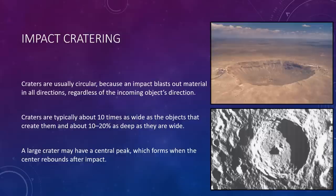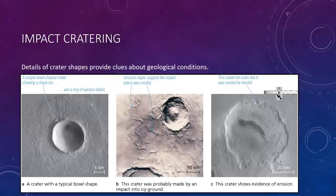Craters are usually circular because an impact blasts out material in all directions, regardless of the incoming object's direction. Laboratory experiments show that craters are typically about 10 times as wide as the objects that created them and about 10-20% as deep as they are wide. For example, an asteroid 1 kilometer in diameter will blast out a crater about 10 kilometers wide and 1-2 kilometers deep. A large crater may have a central peak which forms when the center rebounds after impact, in much the same way that water rebounds after you drop a pebble into the surface of water. The figures here on the right show two impact craters, one on Earth at the top and one on the Moon at the bottom.